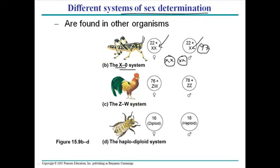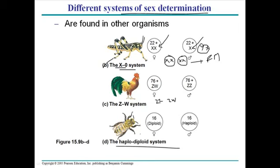Let's talk about the ZW system, found in fowls. Females have ZW and males have ZZ. This is quite similar to the XY system but reversed — in this case it is the males that have the same sets of chromosomes instead of females, opposite to humans where females have the same copy.